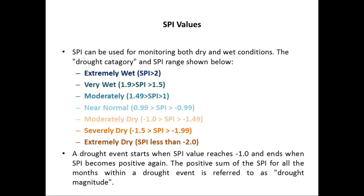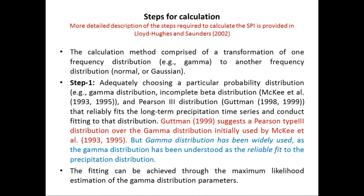A drought event starts when the SPI value reaches negative 1.0 or below. When the SPI value becomes positive again, the positive sum of SPI for all months within a drought event is referred to as drought magnitude.